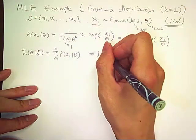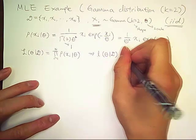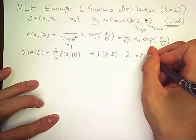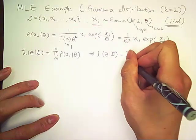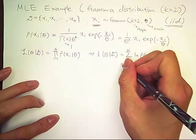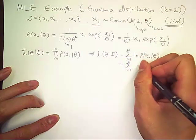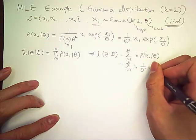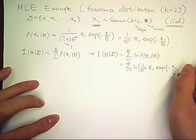And we also can define the log likelihood of theta given data, which is a sum of natural log of p of x sub i given theta. So now this becomes log of 1 over theta squared times x sub i times exponent of negative x sub i over theta.